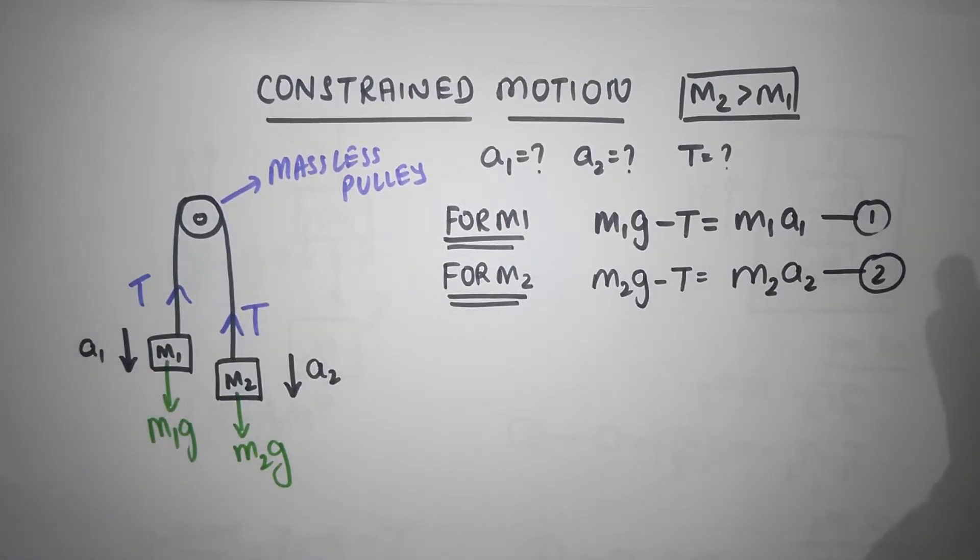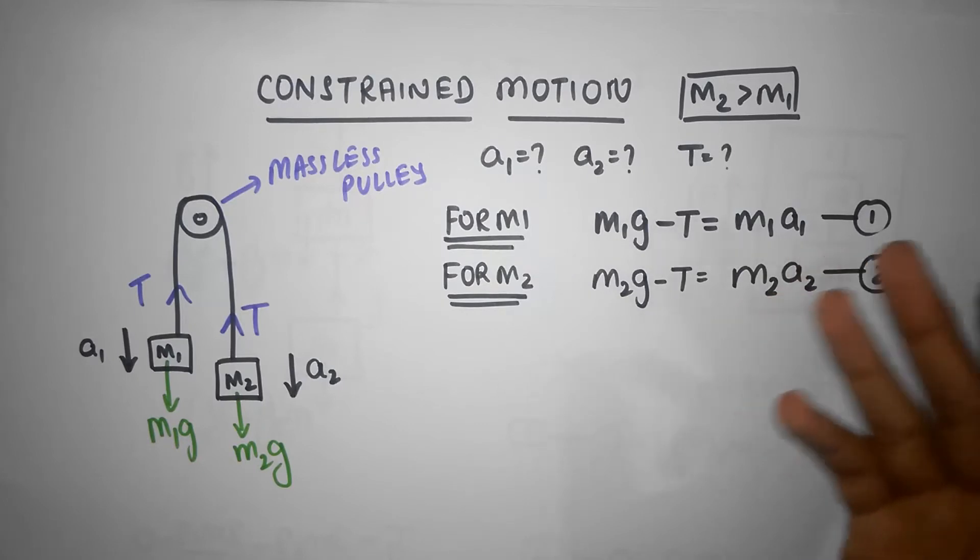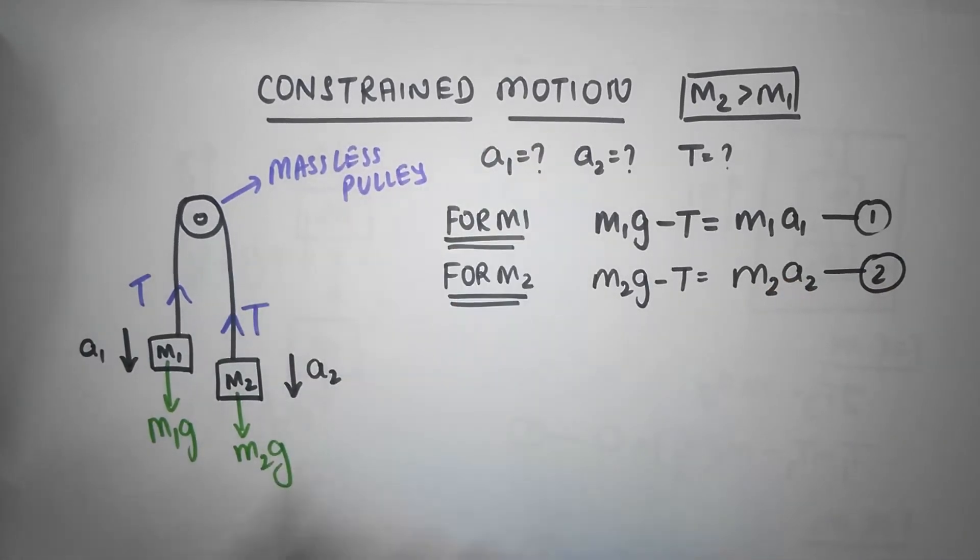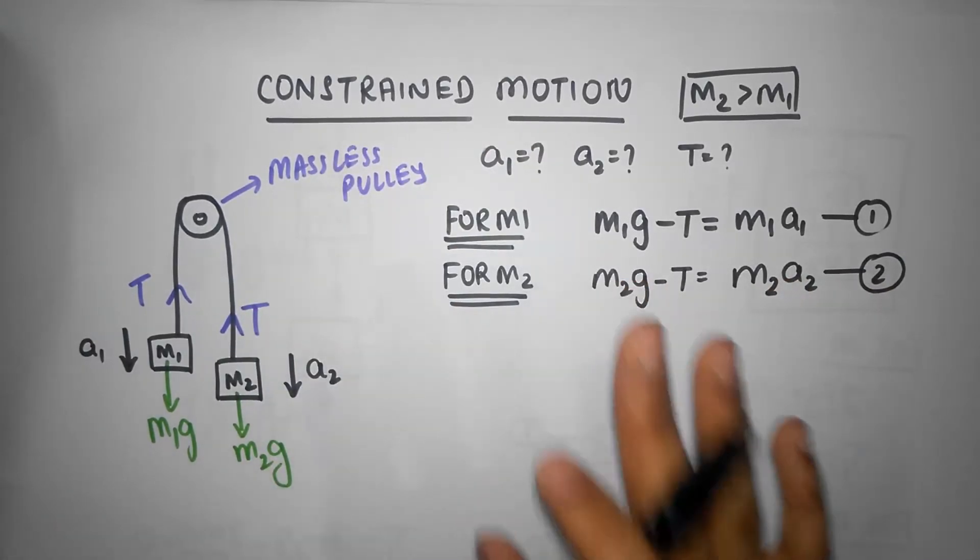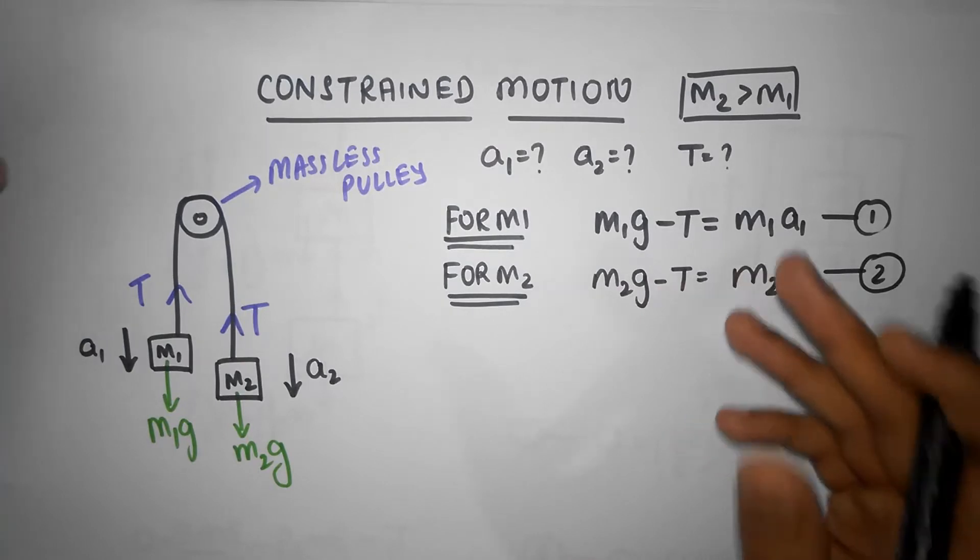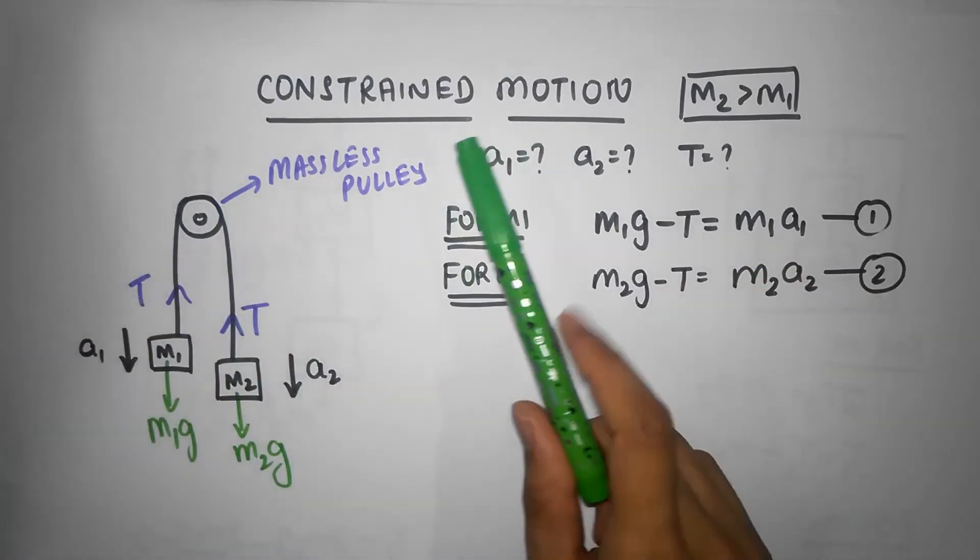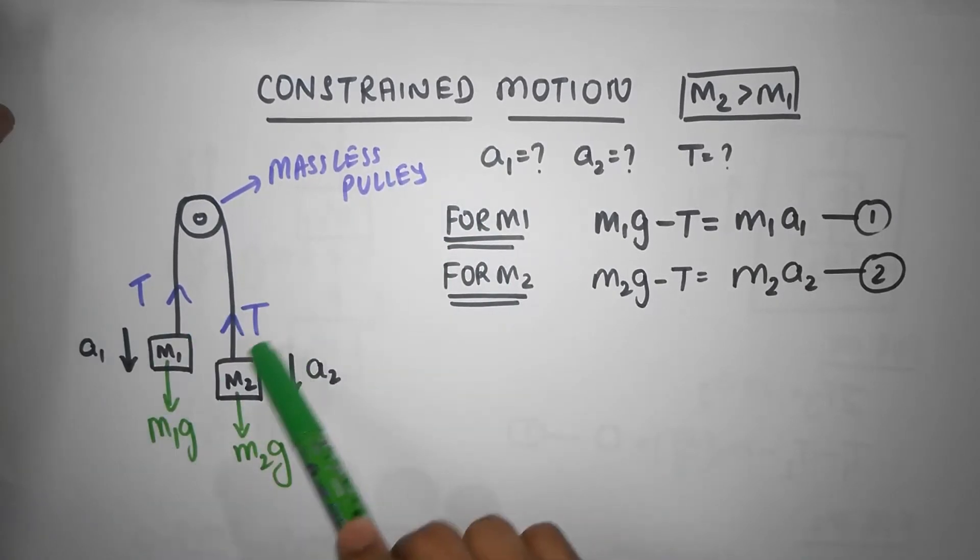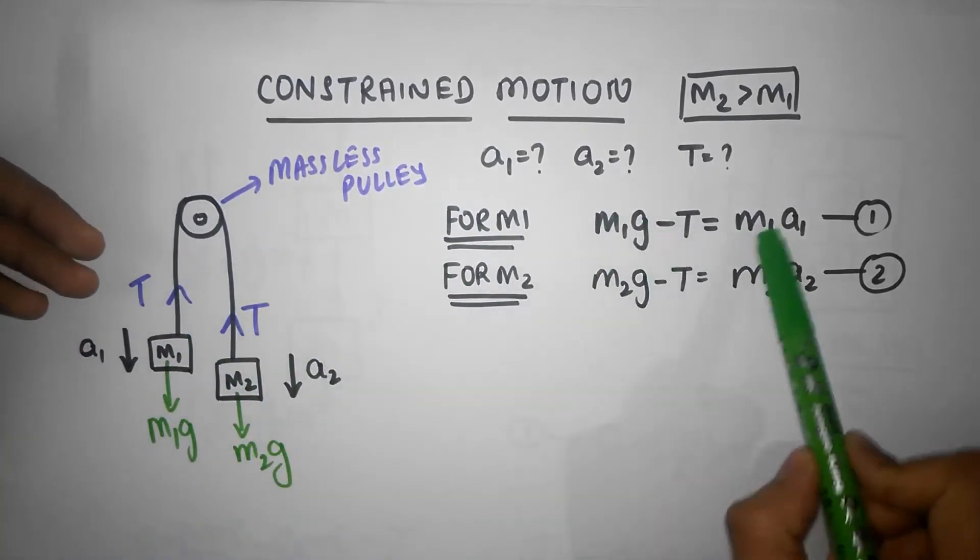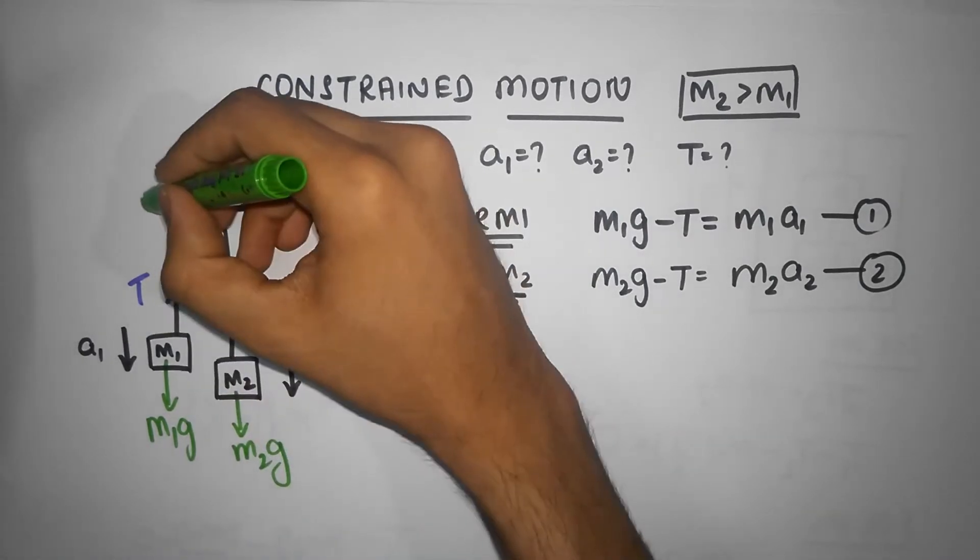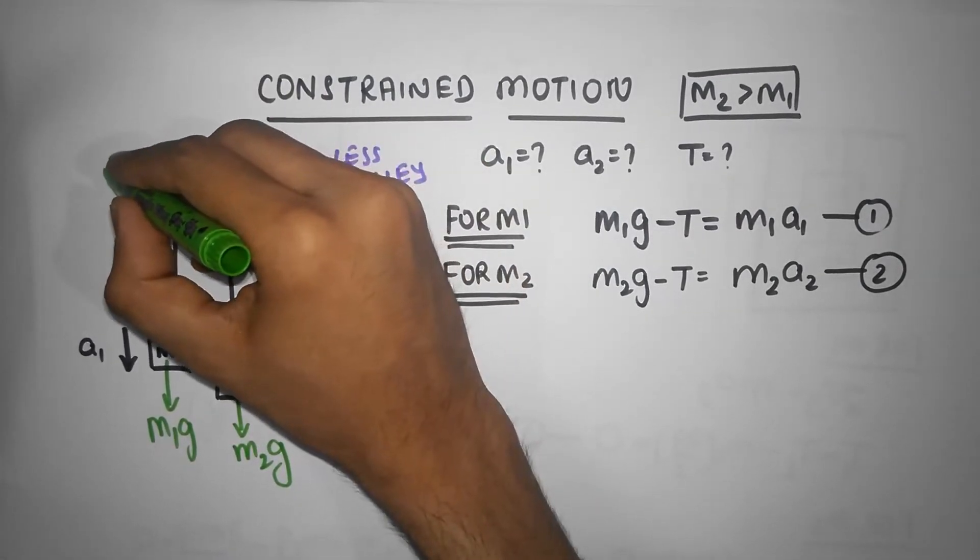So we have two equations like what we discussed. Where does the third equation come from? The third equation comes from the fact that this is a constrained motion. The third equation is the constraint equation. A constraint is basically an additional condition which is there to the system besides the usual F equals M A. The additional condition is the string is inextensible.